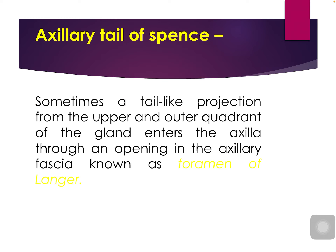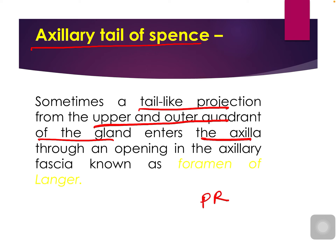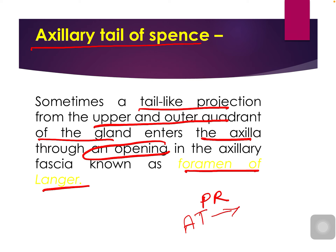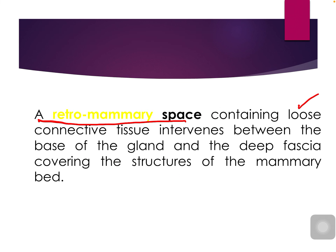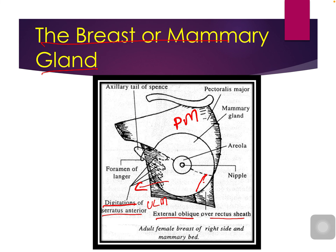What is the axillary tail of Spence? There is a tail-like projection from the upper and outer quadrant of the gland entering the axilla. The opening through which it enters the axilla will be called the foramen of Langer. The student should understand that only this axillary tail part is present beneath the deep fascia.